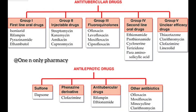Anti-tubercular drugs classification: Group 1 — first-line oral drugs. These drugs are taken orally. There are four drugs: Isoniazid, Rifampin, Pyrazinamide, and Ethambutol. These four drugs come under first-line oral drugs.